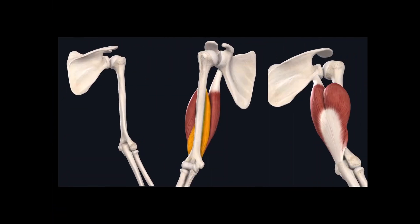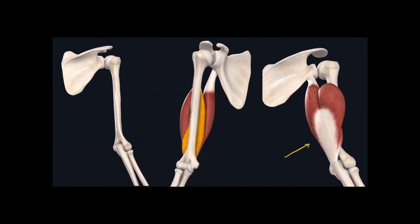Now we move to the posterior aspect of the brachium. This muscle is called the triceps brachii muscle. Triceps means three heads — remember biceps means two heads, and triceps means three. The three heads are: the long head of the triceps brachii muscle, the lateral head, and finally the medial head of the triceps brachii muscle.